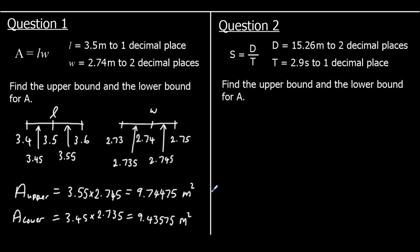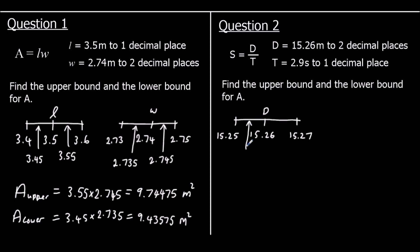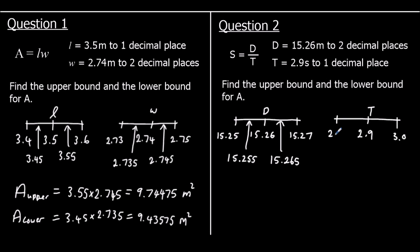Question 2 is a different question. Speed equals distance over time. The distance has been measured to two decimal places and the time to one decimal place. Distance is measured as 15.26 metres, so its lower bound is 15.255 and upper bound is 15.265. Time is measured as 2.9 seconds, so its lower bound is 2.85 seconds and upper bound is 2.95 seconds.